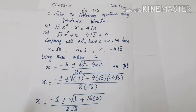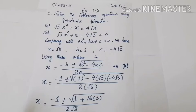Part number 3 is: √3·x² + x = 4√3. Writing the given equation in standard form, we can write it as √3·x² + x − 4√3 = 0. Comparing with ax² + bx + c = 0, we obtain: a = √3, b = 1, c = −4√3.